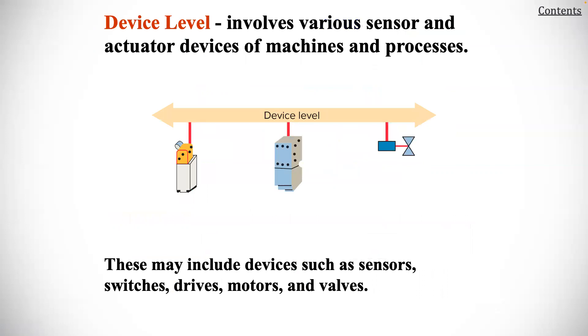The device level involves various sensors and actuator devices of machines and processes. These may include devices such as sensors, switches, drives, motors, and valves.